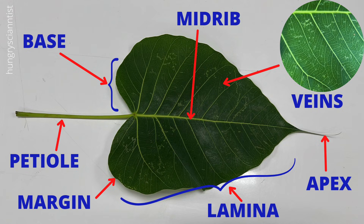A leaf has two main parts: petiole and lamina. Lamina consists of base, margin, midrib, veins, and apex.